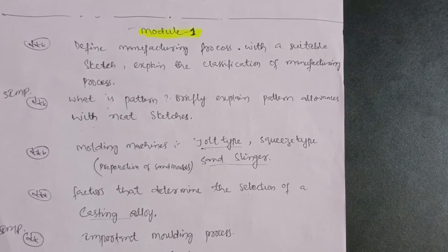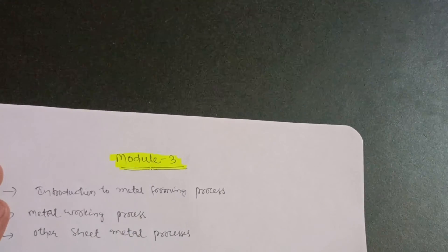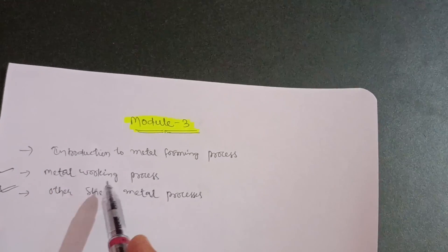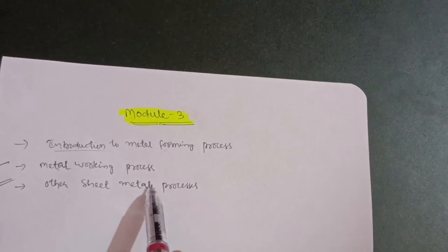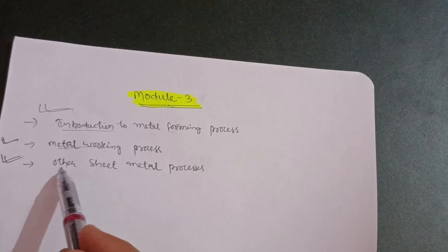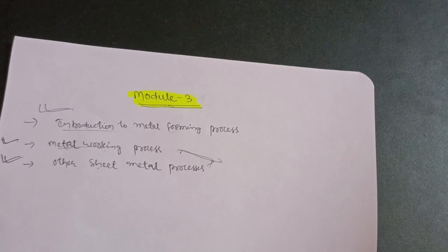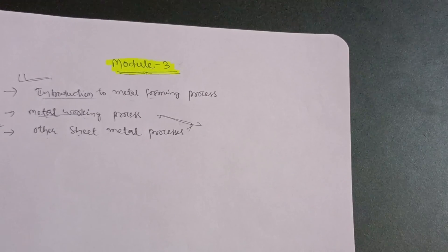Cover all these topics if you have the potential, especially if tomorrow is the examination. For Module 3, it is optional and based on your convenience. If you cover those four modules you will easily pass. But if you want to cover Module 3, go through the syllabus — there are three chapters: introduction to metal forming, metal working processes, and sheet metal processes. Skip the tougher first part and focus on metal working and sheet metal to attempt one or two questions.